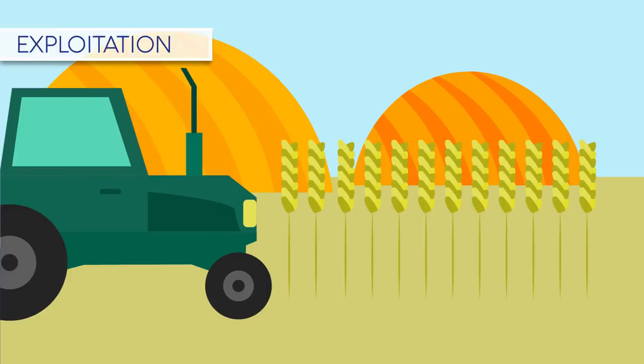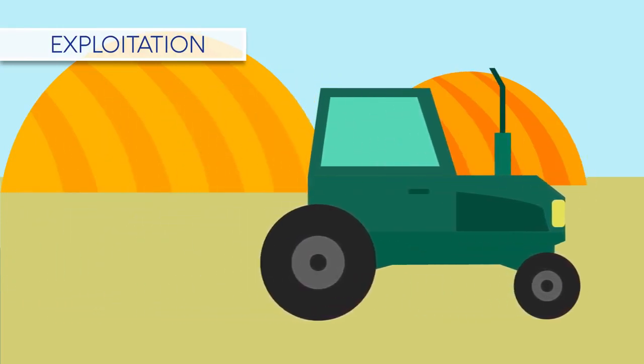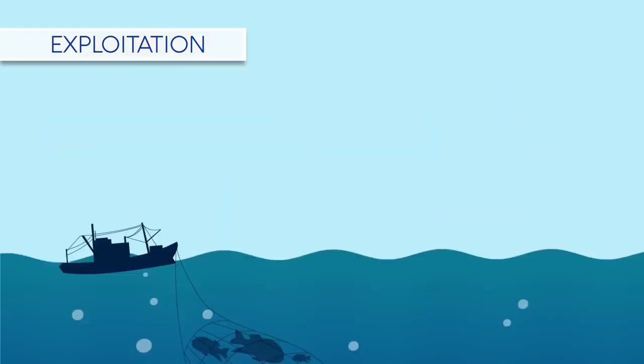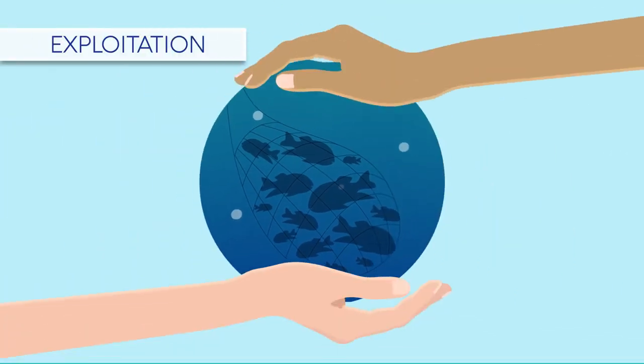After habitat loss, over-harvesting has had a huge effect on biodiversity. Humans historically exploit plant and animal species for short-term profit. If a resource is profitable, we develop more efficient methods of harvesting it, inevitably depleting the resource — as is currently happening with fishing and logging — and the exploited species then needs protection.